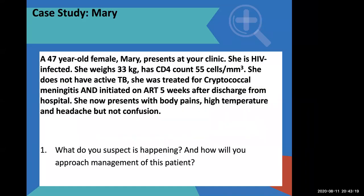This is the last scenario. Here's Mary again — weight 33 kgs, CD4 count 55, no active TB, treated for cryptococcal meningitis, and initiated on ARVs five weeks after discharge from hospital. Today she presents to you complaining of body pains, high temperature, and headache — but there's no confusion. You started her on ARVs, she's coming back. Remember with crypto — when she was diagnosed before she was admitted she had a headache, she was treated in hospital, she came to you stable with no headache, you started her on ARVs. Now she's back a few days or weeks later and says the headache is back.